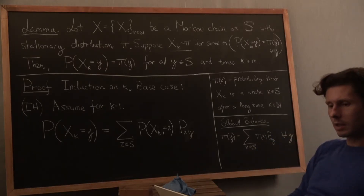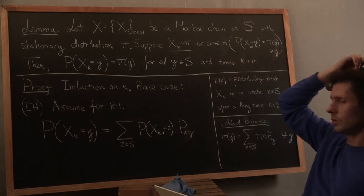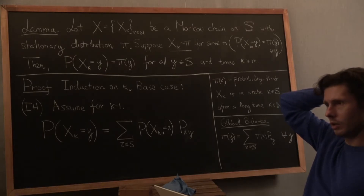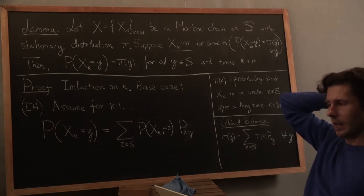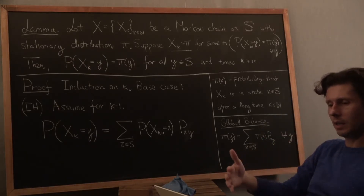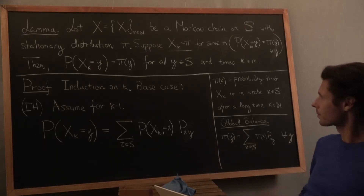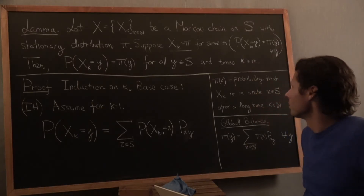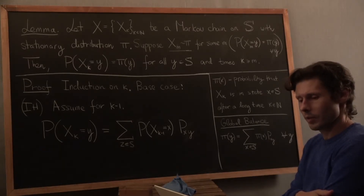Once you hit this magical distribution pi, you stay in it forever — there's no leaving it. You can see how the term 'stationary distribution' is motivated. Another term you may be familiar with is 'equilibrium distribution' — stationary distribution and equilibrium distribution are exactly the same thing. From the equilibrium point of view, once a system modeled by a Markov chain hits equilibrium, it never leaves it — it remains in equilibrium forever. Hopefully this gives you some way of making sense of the stationary distribution concept.